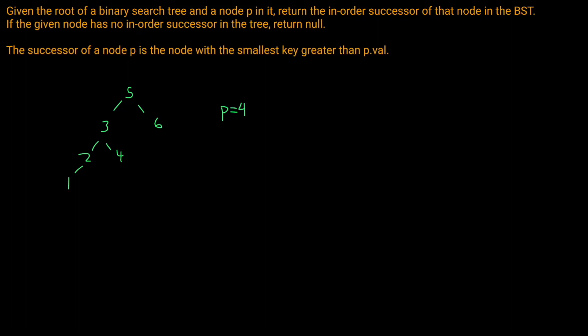Welcome back to the Cracking FAANG YouTube channel. Today we're solving LeetCode problem 285: Inorder Successor in a Binary Search Tree. Given the root of a BST and a node p, return the in-order successor of that node. The successor is the node with the smallest key greater than p.val. For example, if p equals 4, we should return 5.